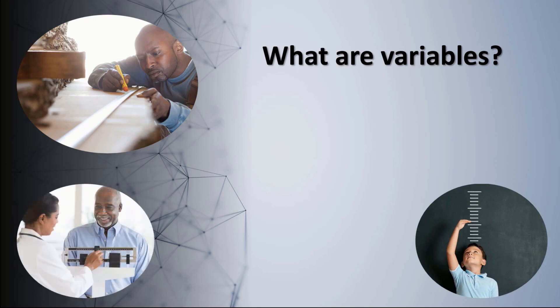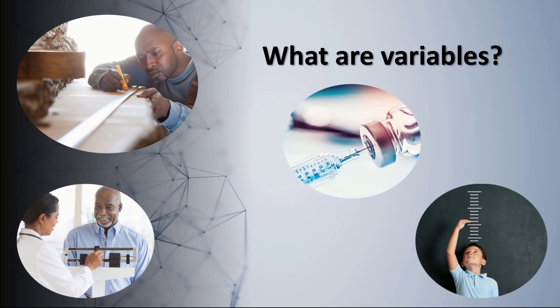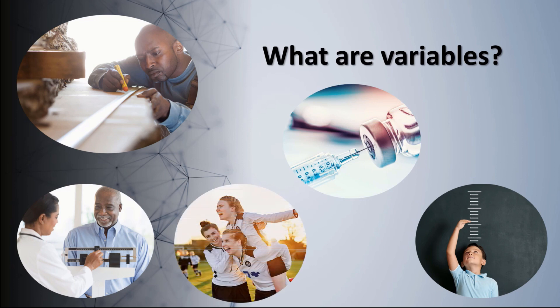Weight is a variable because I can measure someone's weight in pounds or kilograms. Medicine is also a variable because I can measure the dosage. Importantly for psychology, emotions like happiness can also be a variable. After all, I can measure happiness by asking someone on a scale of 0 to 10 — with 10 being the happiest you've ever been and 1 being the least happy — how happy are you right now?